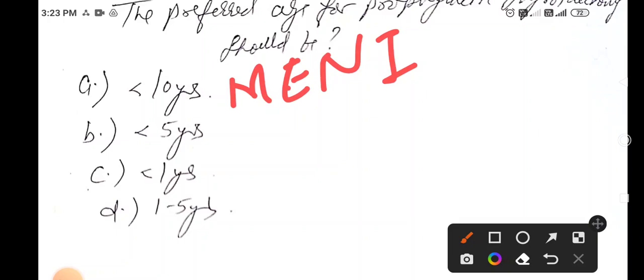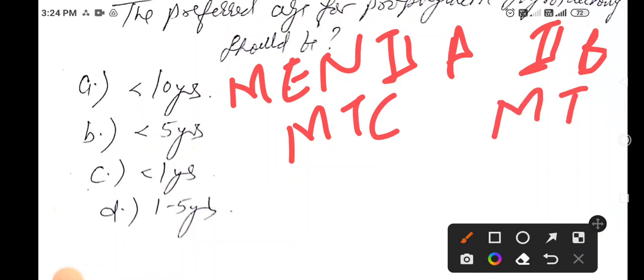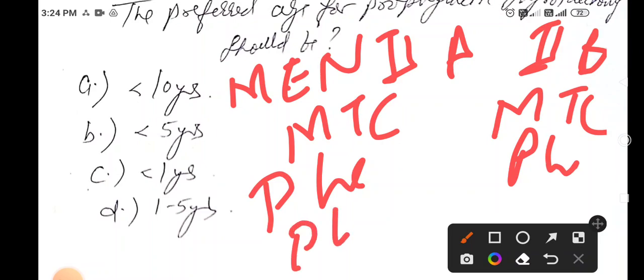Whereas MEN 2A and 2B have MTC medullary thyroid carcinoma in both, also pheochromocytoma in both conditions. In MEN 2A there is parathyroid hyperplasia. MEN 2A other name is Sipple syndrome.